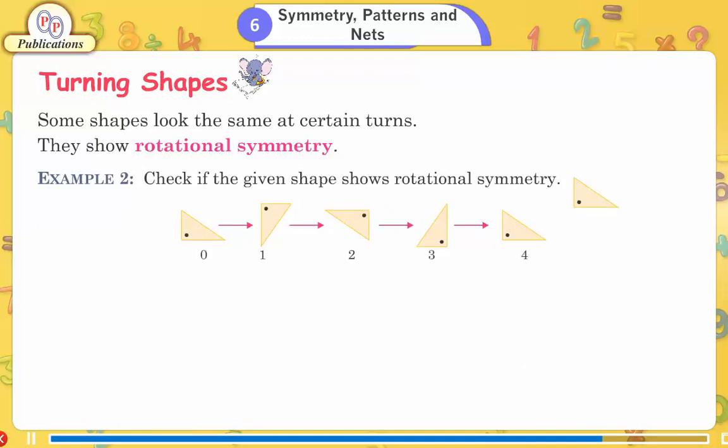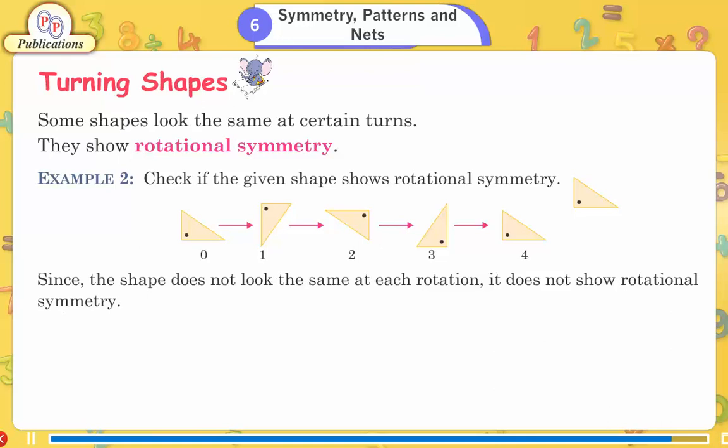Example 2: Check if the given shape shows rotational symmetry. 0, 1, 2, 3, 4. Since the shape does not look the same at each rotation, it does not show rotational symmetry.